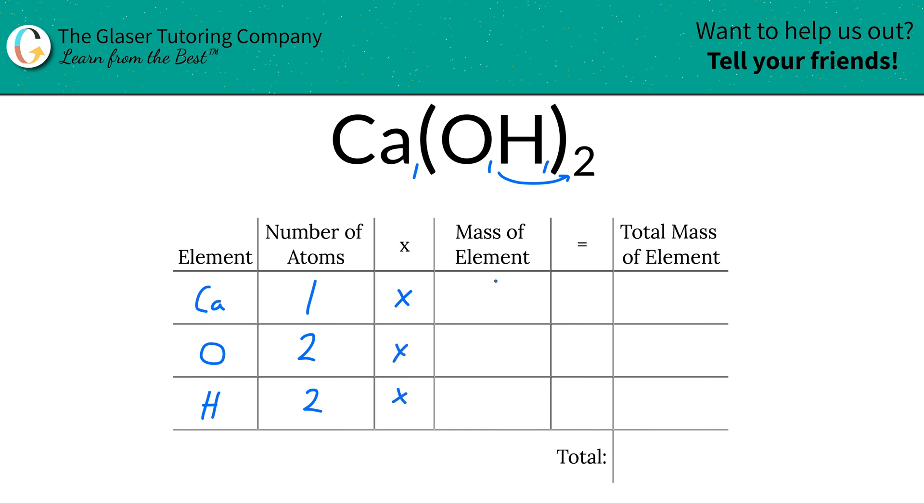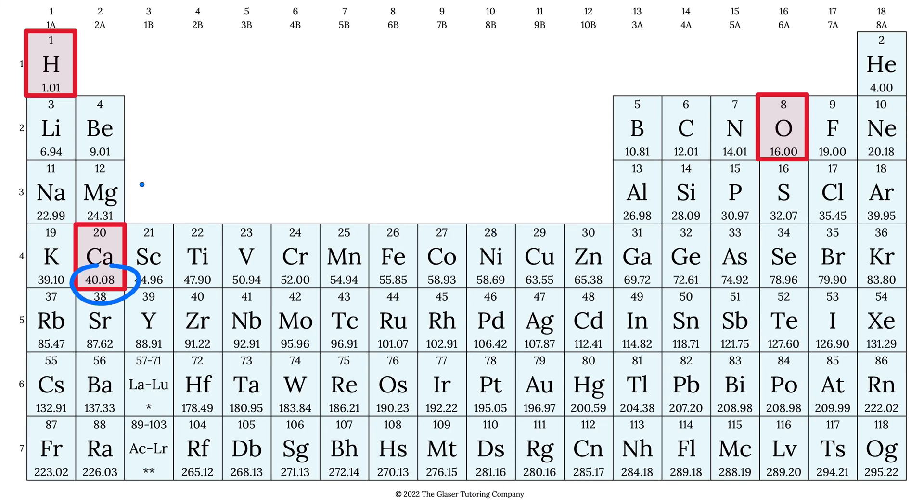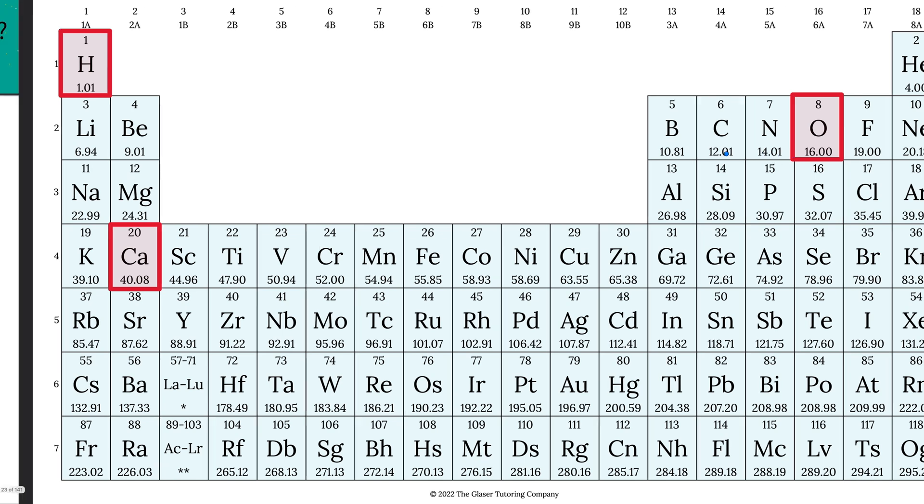Now we're simply going to take those number of atoms and then multiply it by the mass of the element. Where do we find the mass of the elements? You got it, periodic table. Let's take a look. So we got calcium here, hydrogen, and oxygen. All right, so calcium is 40.08, hydrogen is 1.01, and oxygen is 16. Those represent gram per mole if you're finding molar mass, or AMU if you're finding molecular mass. So let's write them in.